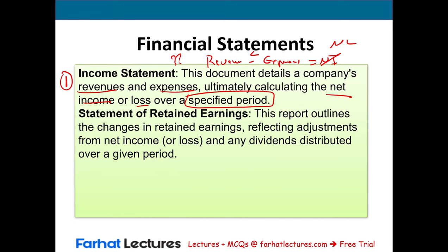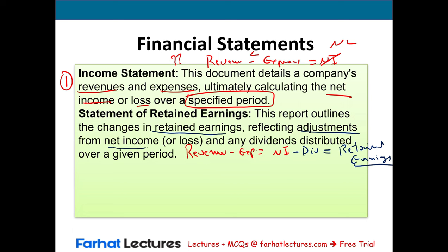Then we will prepare the statement of retained earnings. What's the statement of retained earnings? Remember, in the first step, we computed revenues minus expenses, and let's assume we have net income. Then we deduct from net income the dividend. Whatever is left from net income after we deduct the dividend is called retained earnings. This report outlines the changes in retained earnings, reflecting adjustments from net income and any dividends distributed for a given period of time — the same period. This is the second financial statement.